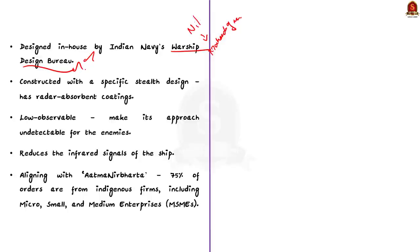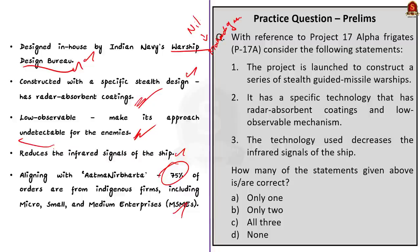These guided missile frigates have been constructed with a specific stealth design which includes radar-absorbent coatings. Due to this these ships are very stealthy — they can approach enemy ships undetectably. This new technology also reduces infrared signals from the ships. A substantial 75 percent of the orders for equipment and systems of Project 17A are from Indian firms, mainly from MSMEs, aligning with India's commitment to Atmanirbhar Bharat.